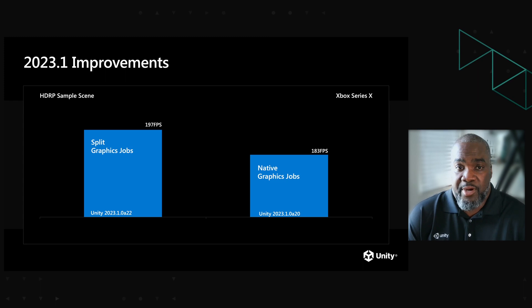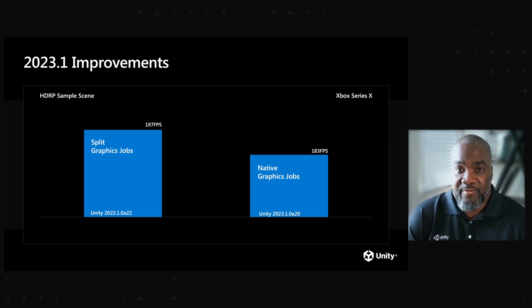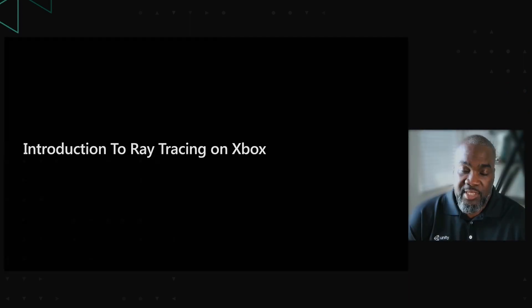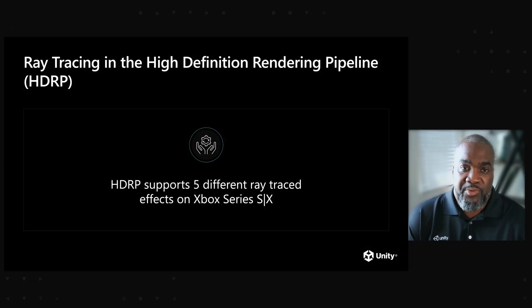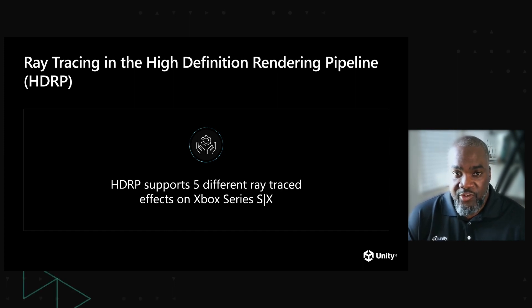These improvements benefit all Windows-based platforms, and Unity's ray tracing implementation relies on the DirectX 12 API. So let's dive into ray tracing on Xbox. Currently, ray tracing is only supported when using Unity's High Definition Rendering Pipeline, or HDRP. HDRP supports five different ray tracing effects on Xbox platforms.